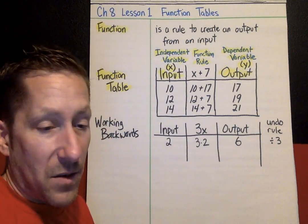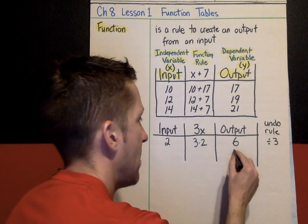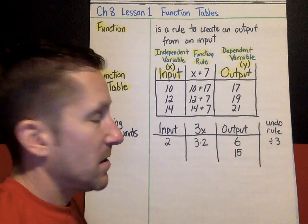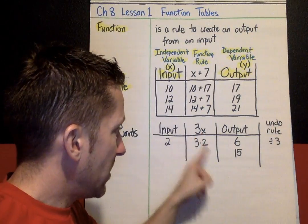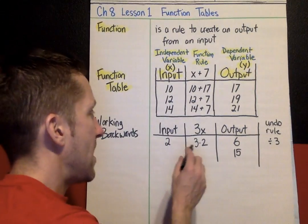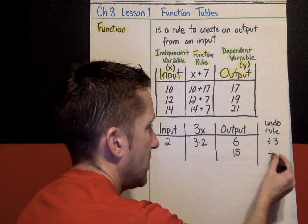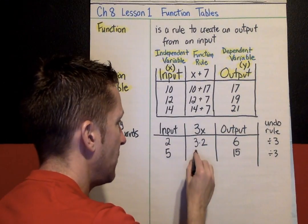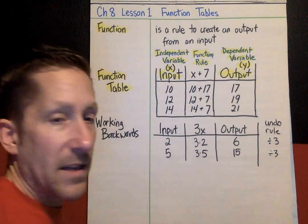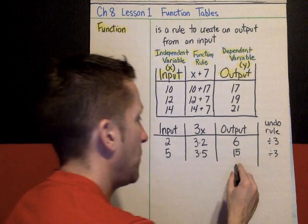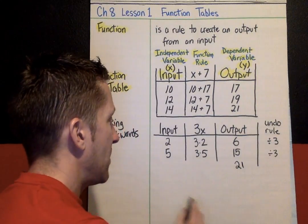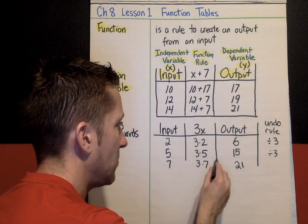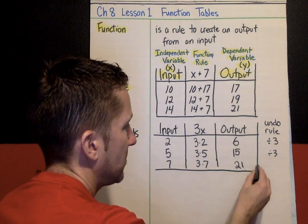To undo the rule, we would divide by 3. 6 divided by 3 is another strategy. 6 divided by 3 is 2. What if our output was 15? 3 times what number gives us 15? That's another strategy. Just look at the rule and figure out, well, what's going to work to get me to that? Or, undo the rule with divide by 3. What's 15 divided by 3? Output, I think, is 5, but let's test it. 3 times 5 does work. That's 15. What if our output was 21? 21 divided by 3 is 7. And let's just plug it into our rule to be sure. 3 times 7 is 21. That is working backwards.